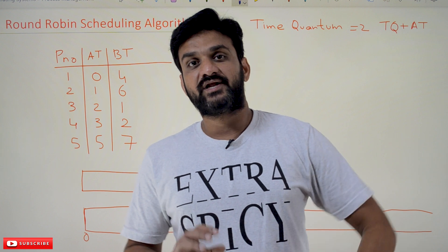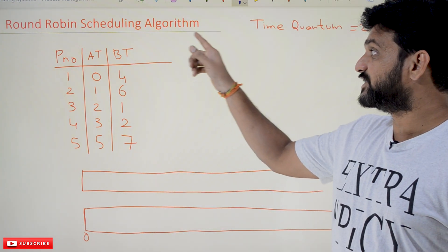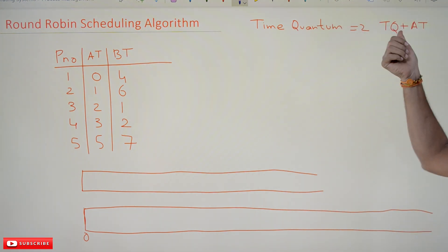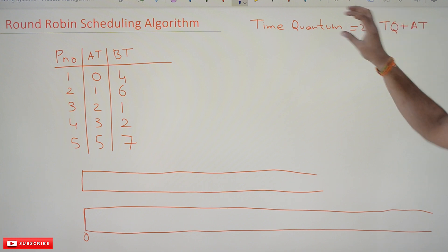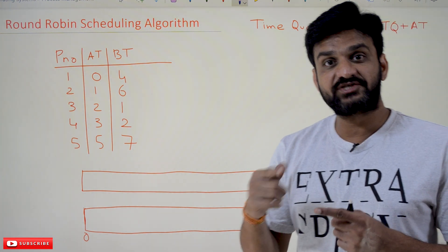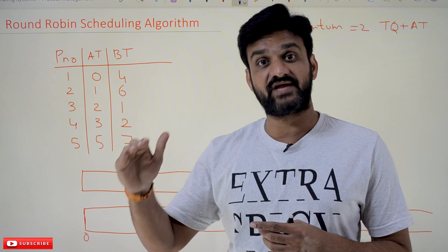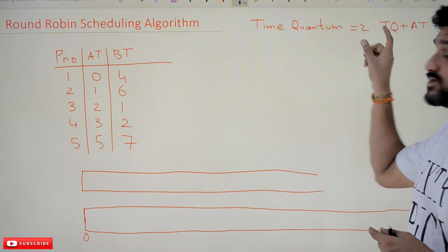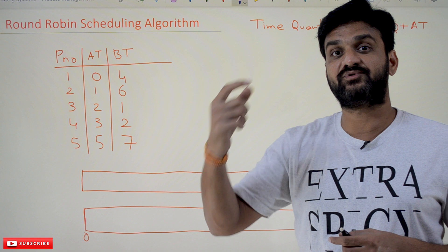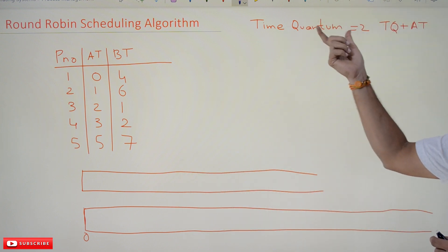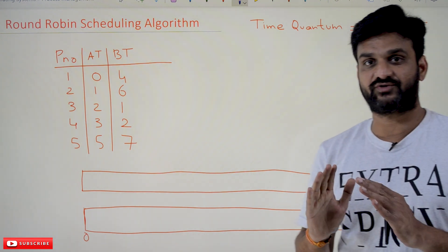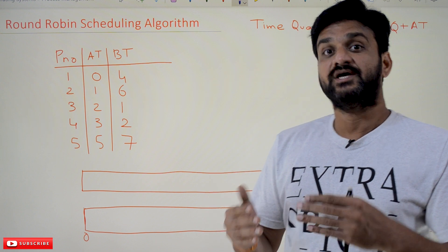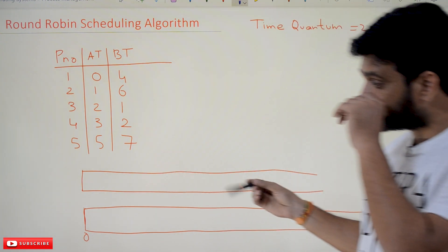The round-robin scheduling algorithm is based upon time quantum. It uses both time quantum and arrival time. We can consider this as the preemptive version of first-come-first-serve. Just like FCFS uses arrival time, round-robin also uses arrival time, but additionally it considers the time quantum. It is a preemptive algorithm. We will assume the time quantum is two units of time, so processes will be preempted every two units.